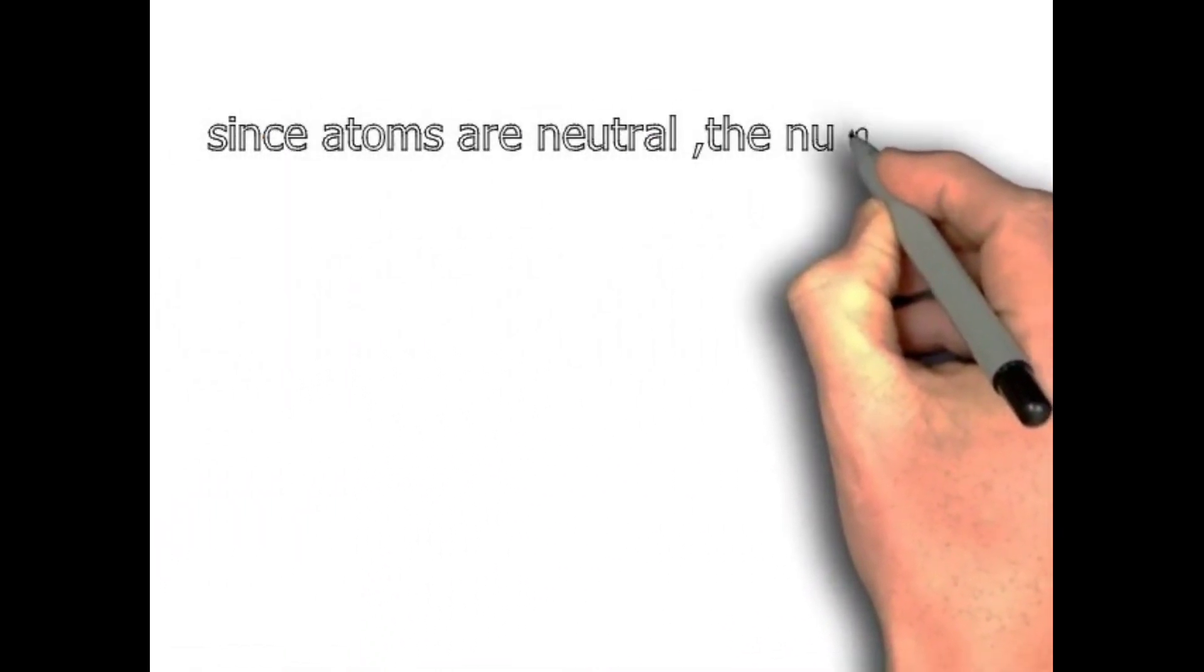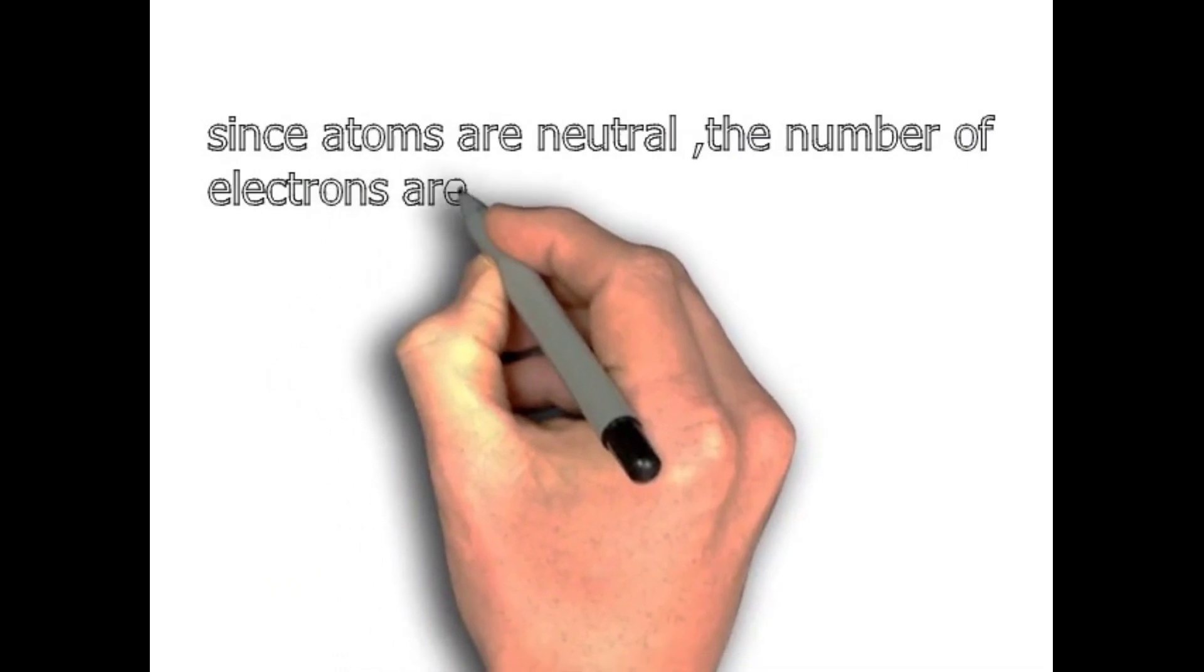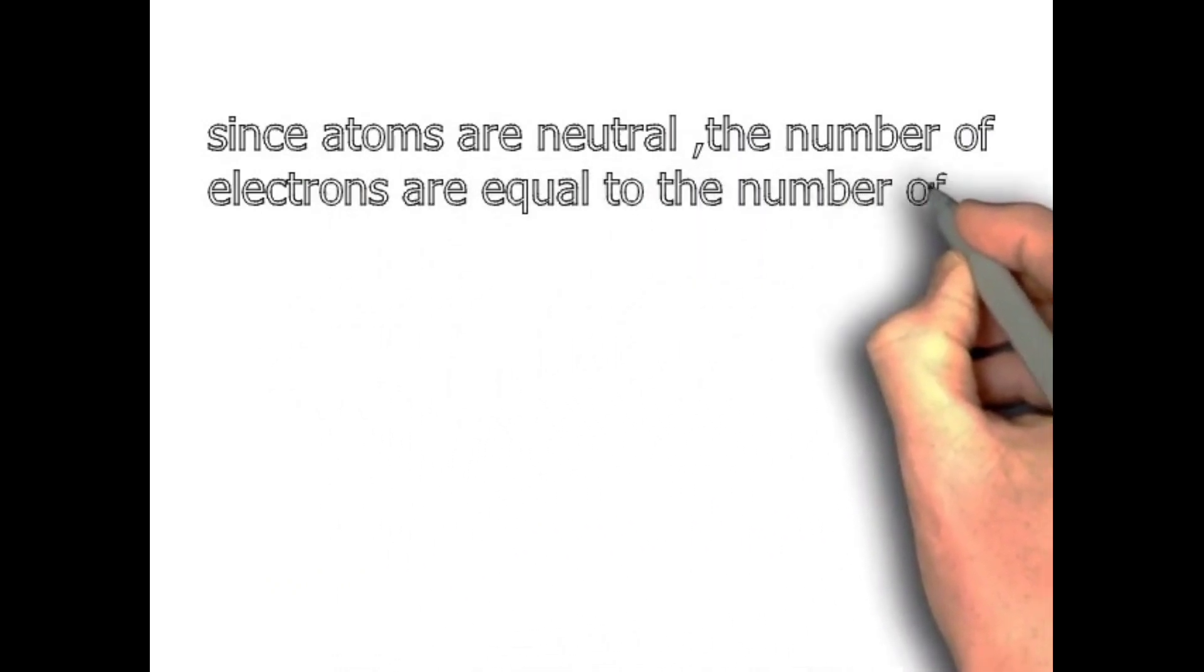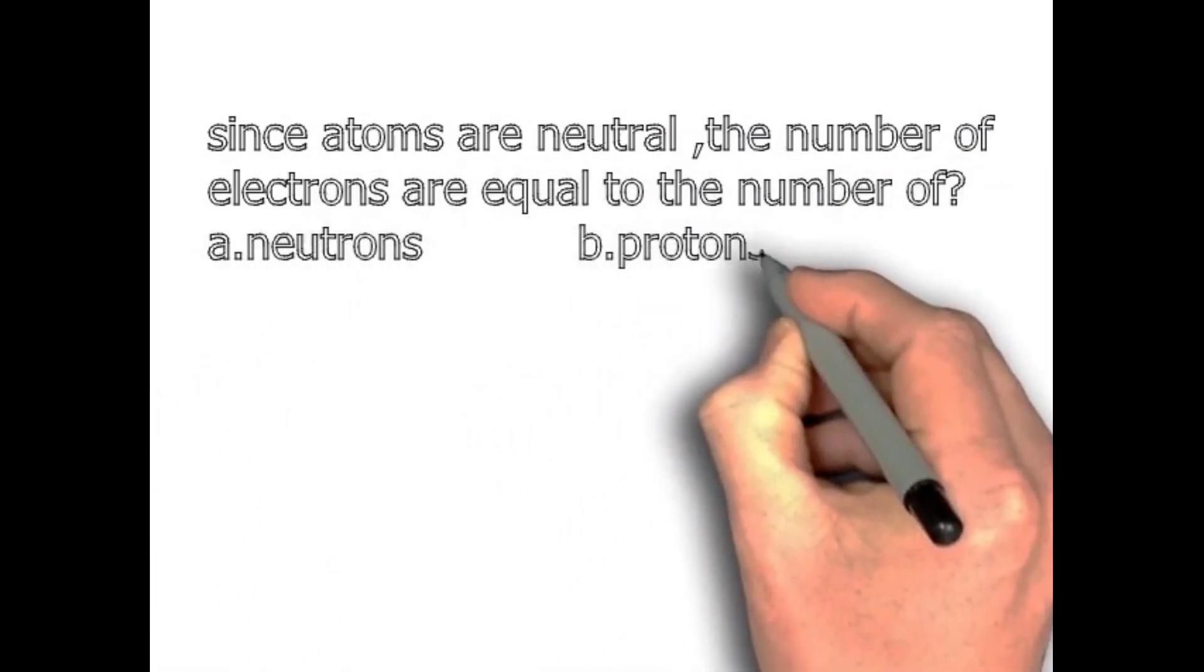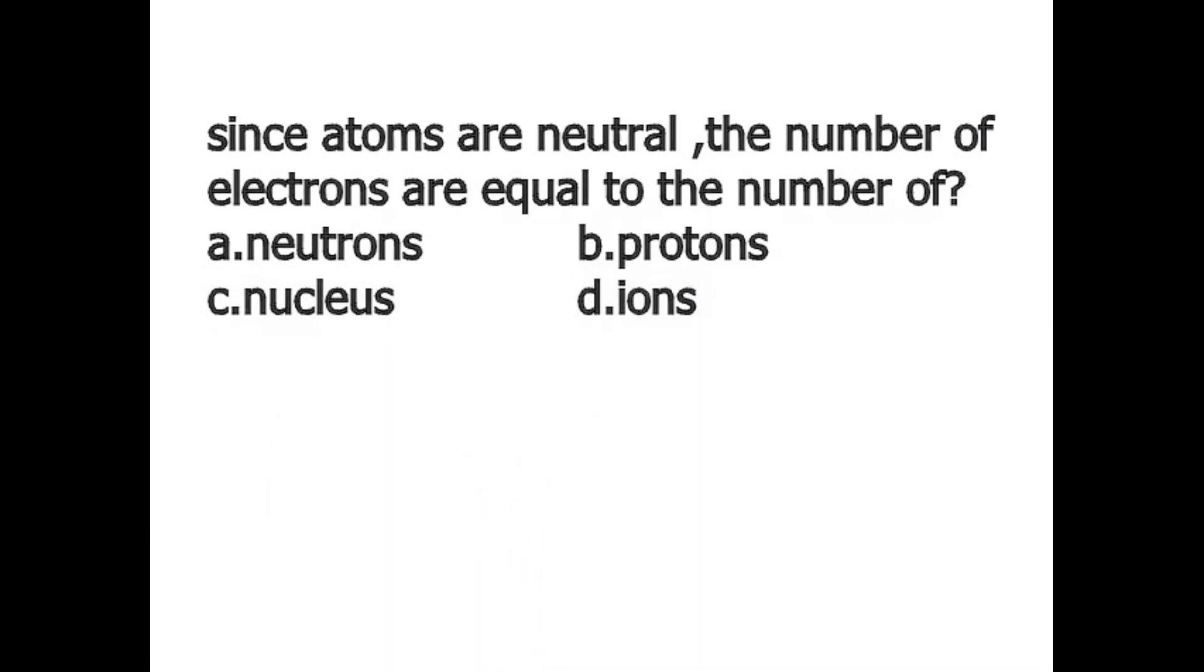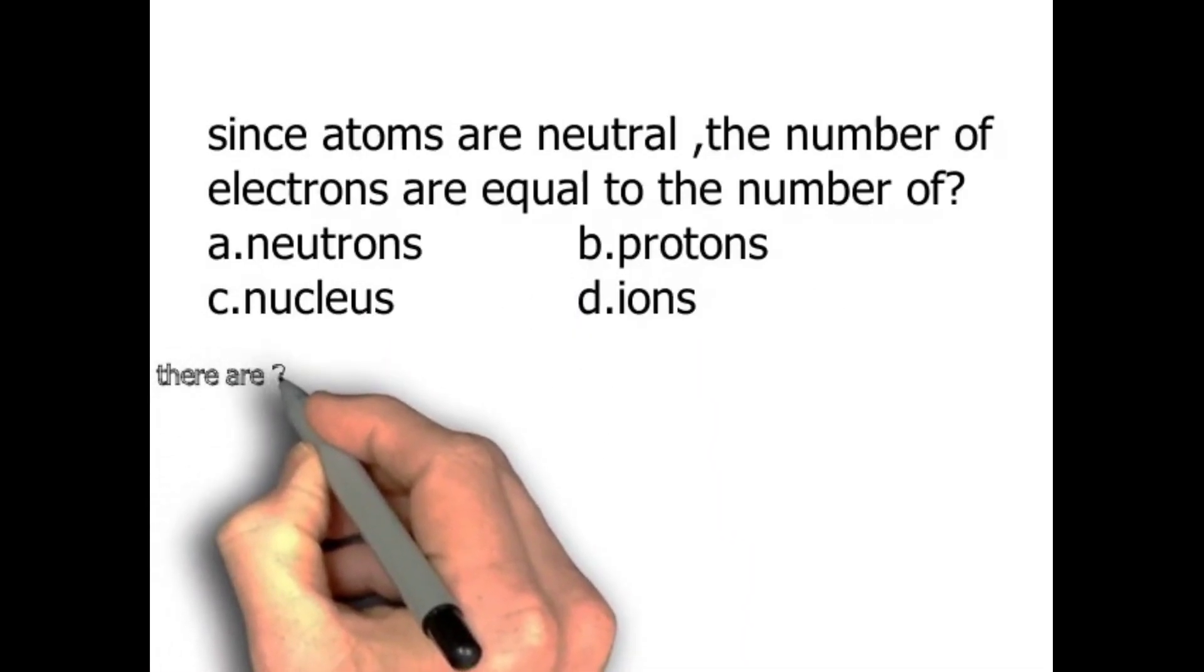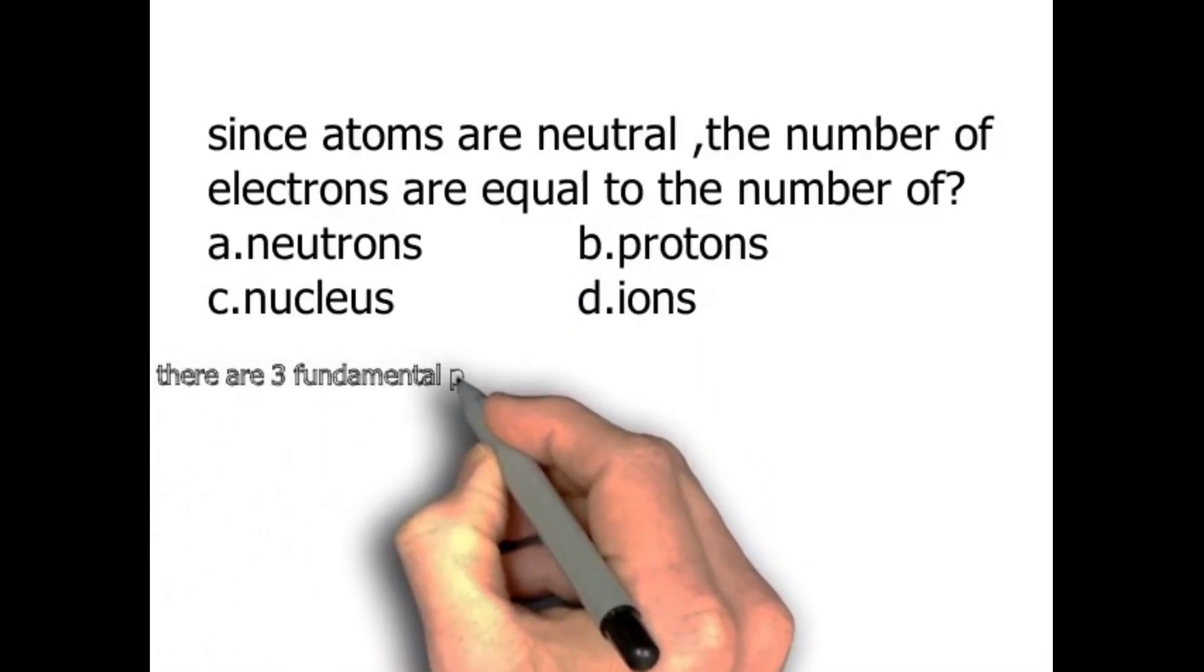Since atoms are neutral, the number of electrons are equal to the number of... First option we have neutron, second option we have proton, third option we have nucleus, and the fourth option is ions.